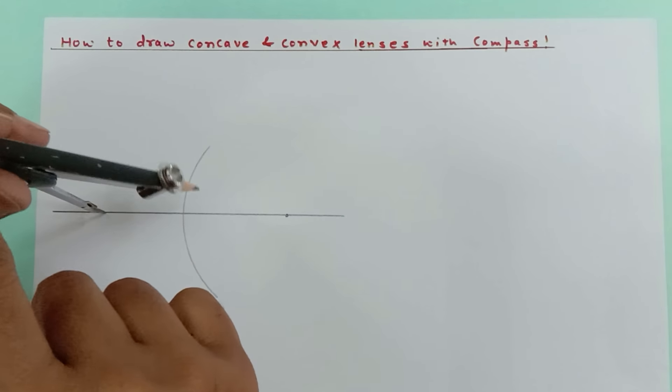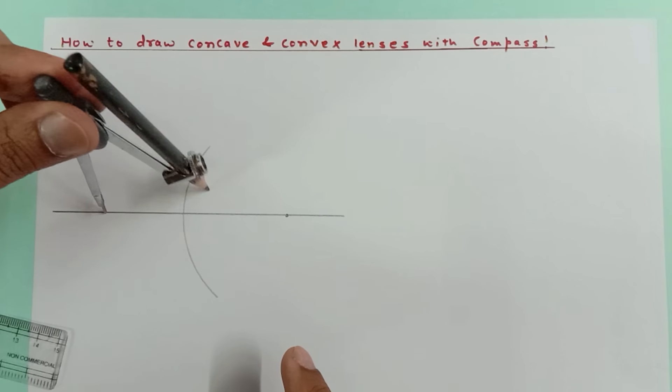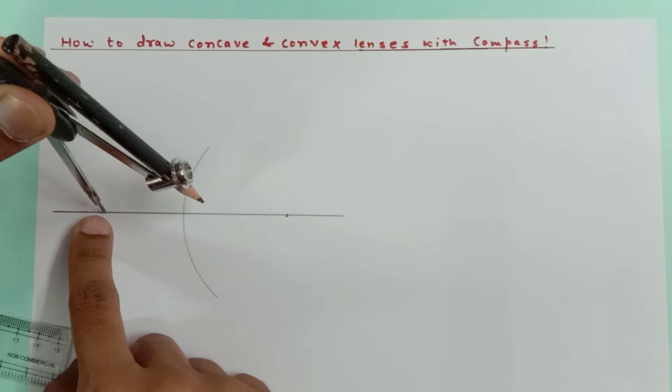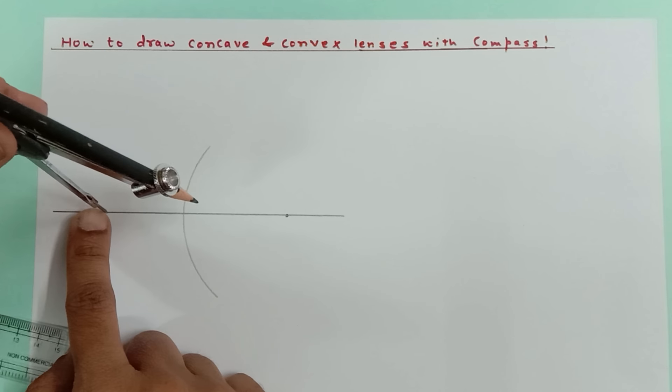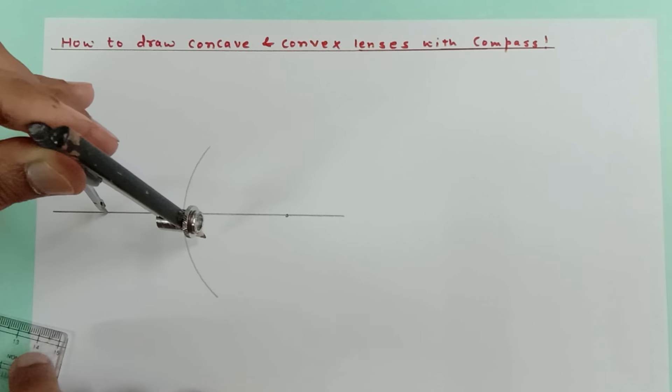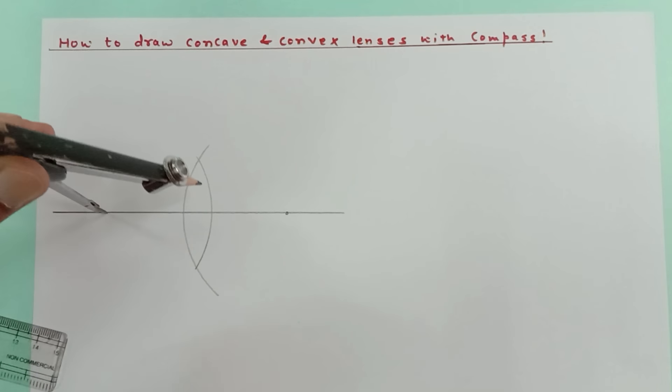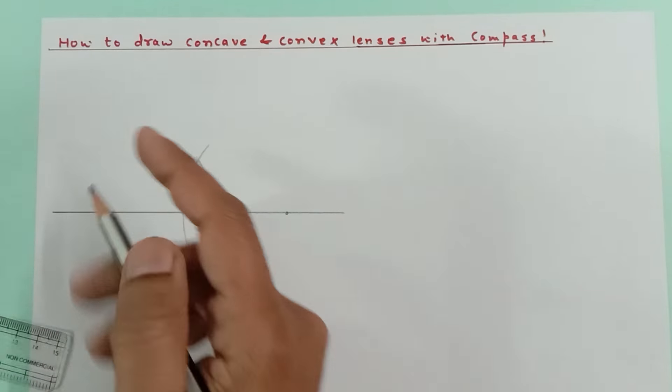Now by keeping the same distance, make sure your hand doesn't move and this point must lie exactly on the same line. Do like this, and now this is your lens ready.